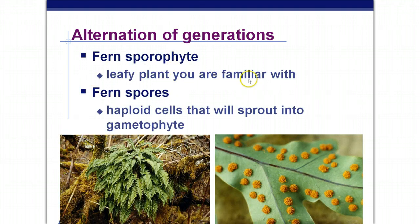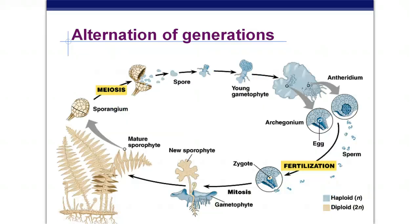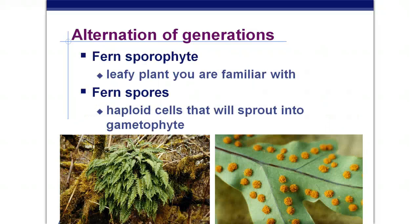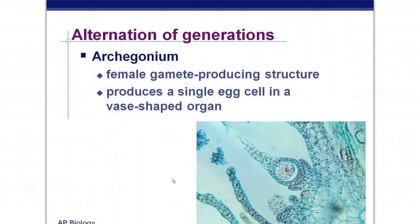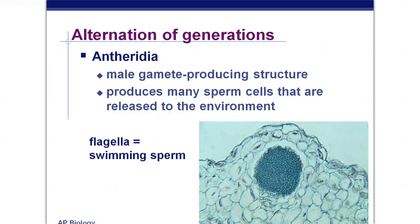The fern sporophyte is the leafy plant you're familiar with. Fern spores are haploid cells that will sprout into the gametophyte — that little heart-shaped structure. If you already have that from Chapter 29, you don't have to write this down, but you should be aware of how pteridophytes do their thing. The archegonium produces the eggs, and the antheridium is the sperm-producing structure.